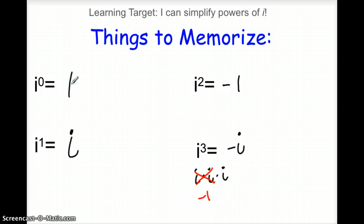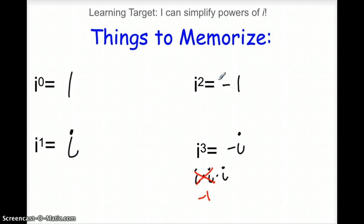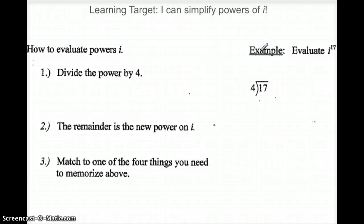So notice we've got a cycle going: i, negative one, negative i. If we look at powers of i — zero, one, two, three — what if I had i to the fourth? We'd start back over in the cycle and go back to one. Power of five would be i, power of six negative one, power of seven negative i. We just keep going through the cycle. But what if I gave you i to the 123rd power? Are you really going to count through the cycle? No, that would be ridiculous. So we've got this little trick.